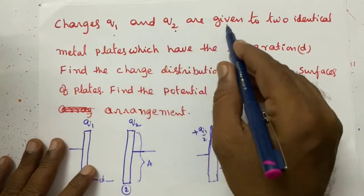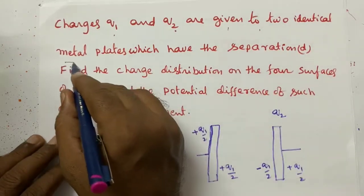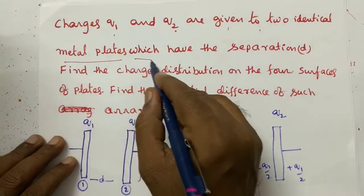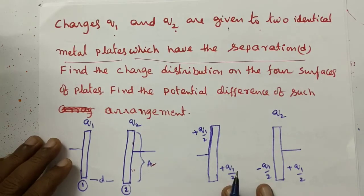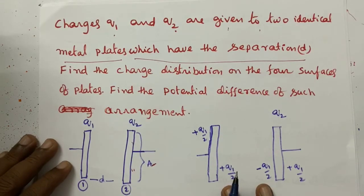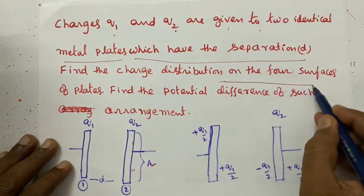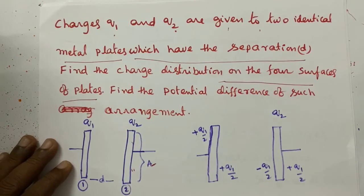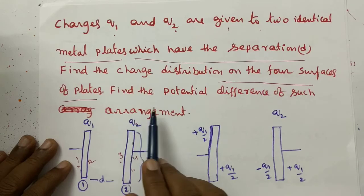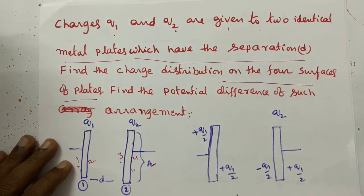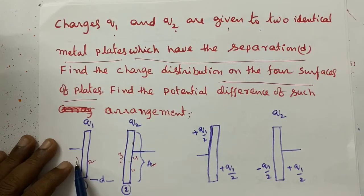Charges Q1 and Q2 are given to two identical metal plates with separation d and area A. We are going to find the charge distribution on the four surfaces of the two plates — surfaces 1, 2, 3, and 4 — and then find the potential difference between the two plates.